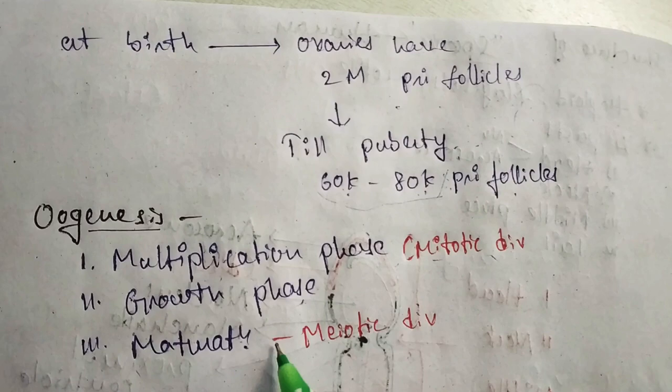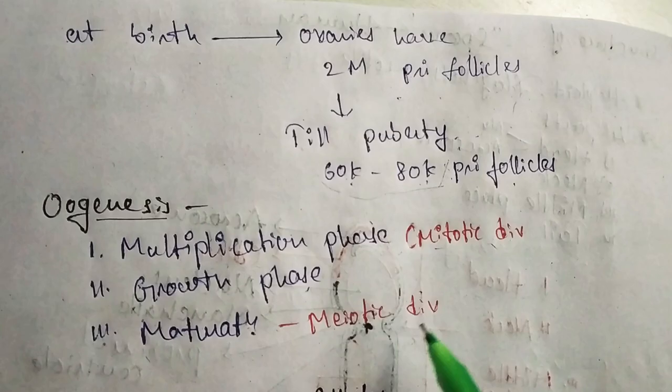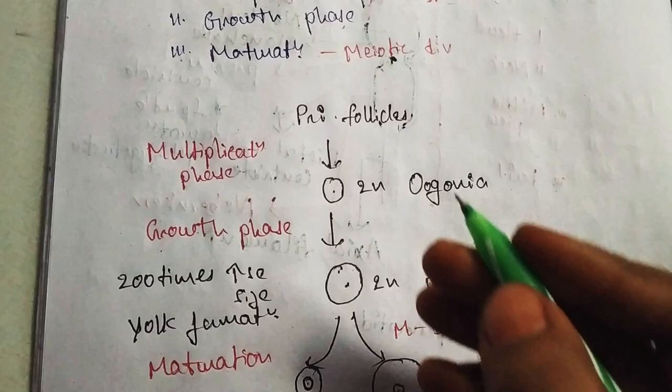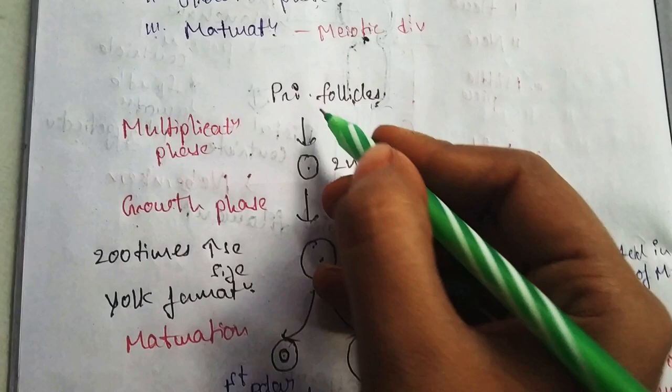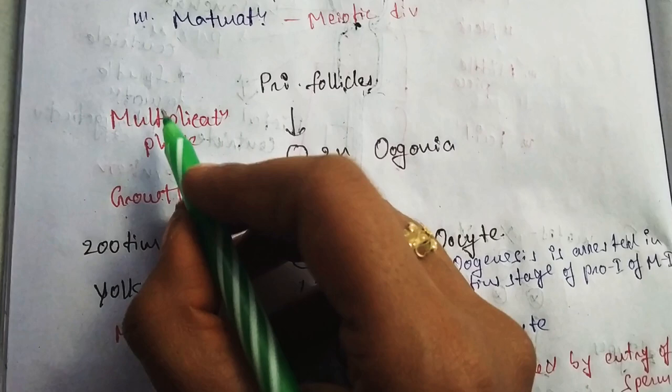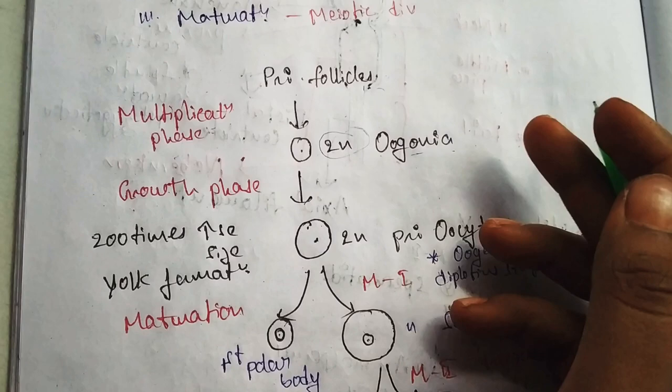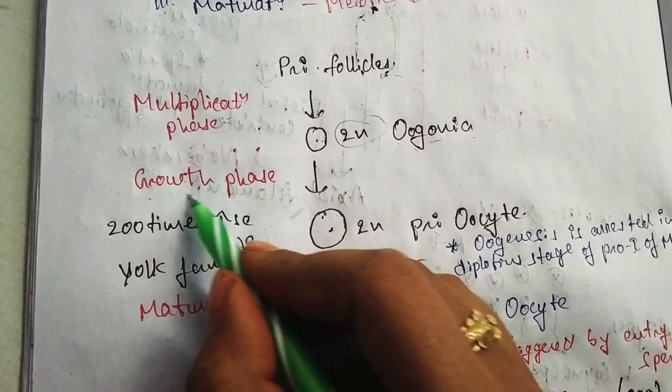In the multiplication phase, primary follicles are present at the time of puberty. After mitotic division in the multiplication phase, oogonia are formed. Oogonia are diploid in number, meaning two sets of chromosomes are present in the cell.